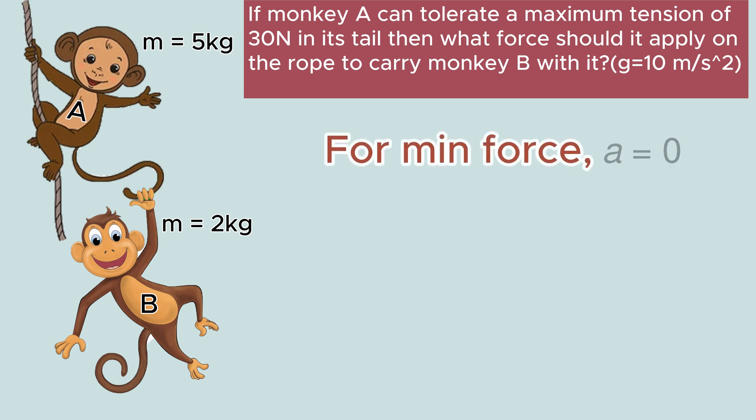For minimum force, there will be no acceleration and the tension in the rope just has to balance the combined weight of both the monkeys. Therefore, T must be equal to 5g plus 2g. Therefore, we get tension as 70 newton.